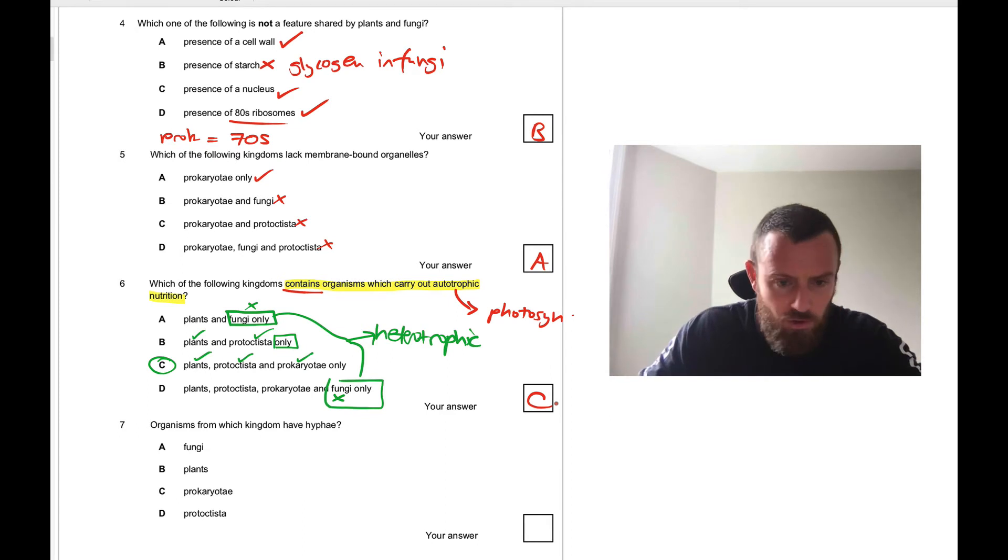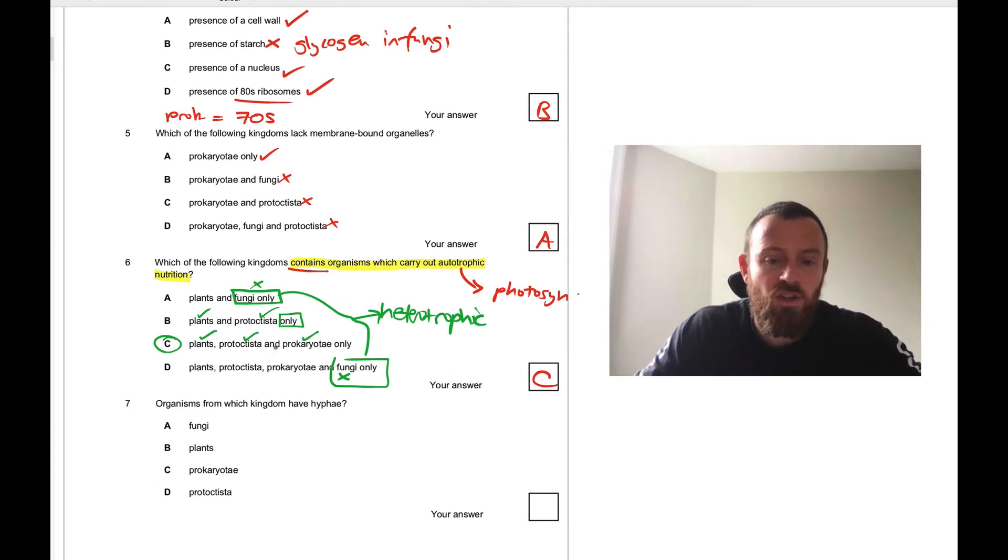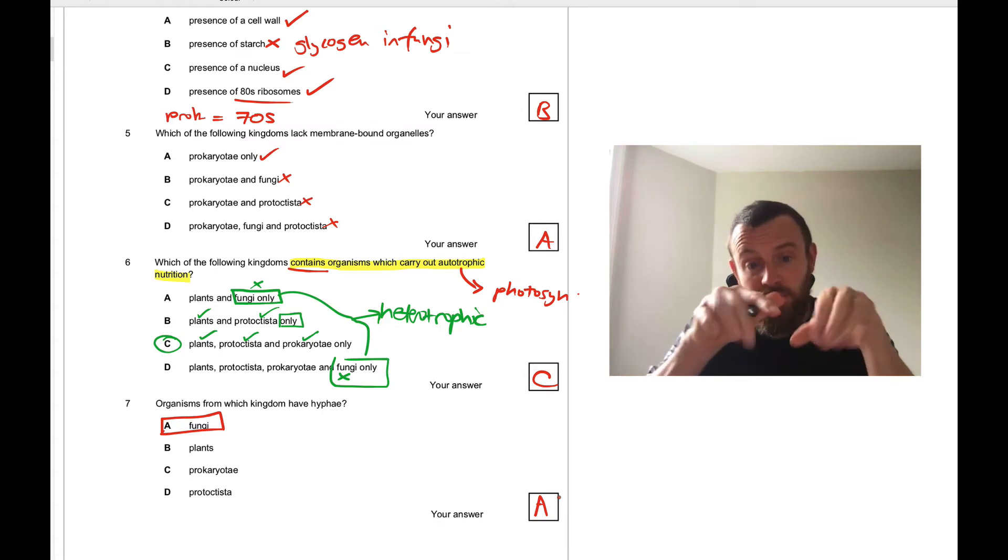Moving on to seven. Organisms from which kingdom have hyphae? That's just a simple one, it's fungi. Hyphae, these thread-like structures that grow out from the central mycelium of the fungi.